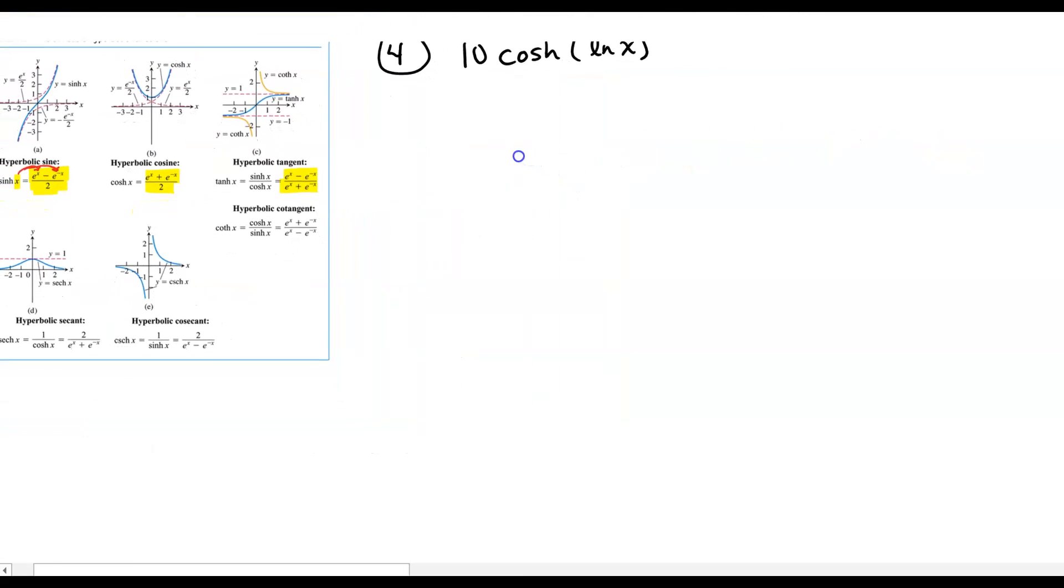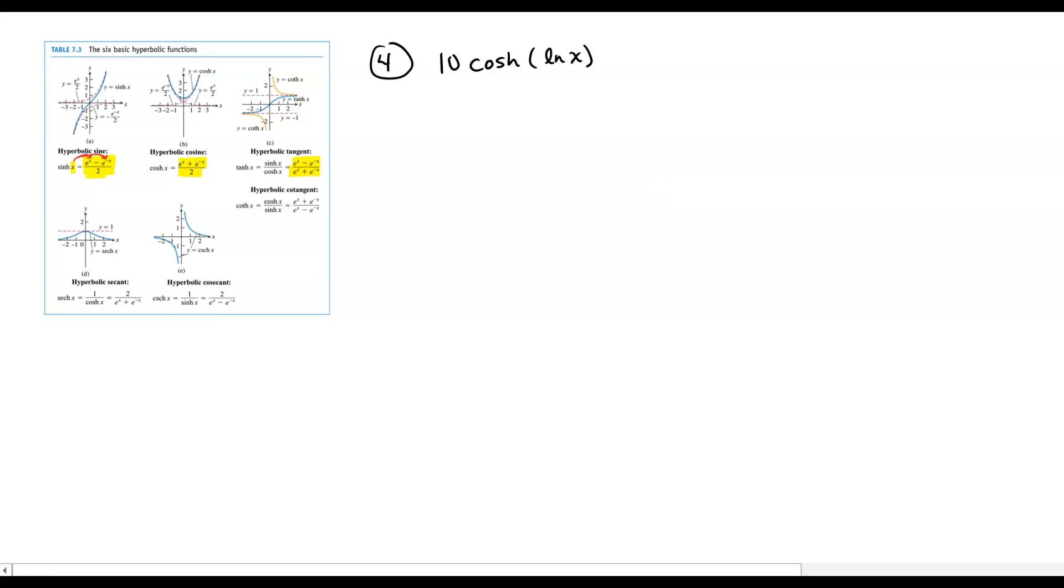So we're going to try to rewrite this expression that we're given in terms of exponentials, and then we're going to simplify our results. If I have 10 cosh of the natural log of x, I'm going to take this to be kind of like my u. And I'm going to fit it into the identity for cosh.